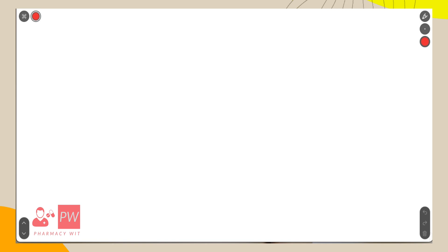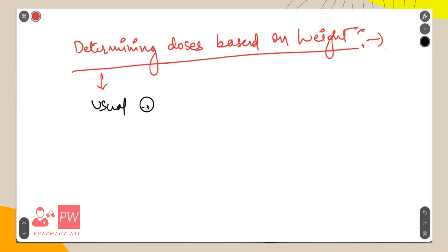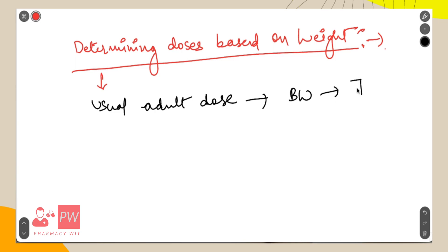Hello everyone, welcome to my YouTube channel Farme Save It. Today we will discuss how to determine the dose of a drug based upon the weight. The usual adult dose for most drugs is based upon body weight. The body weight of a normal adult patient is on average about 70 kg, which is approximately equal to 154 pounds.